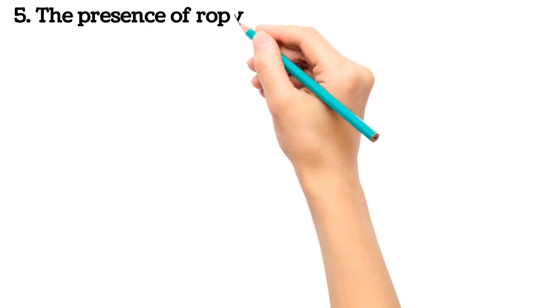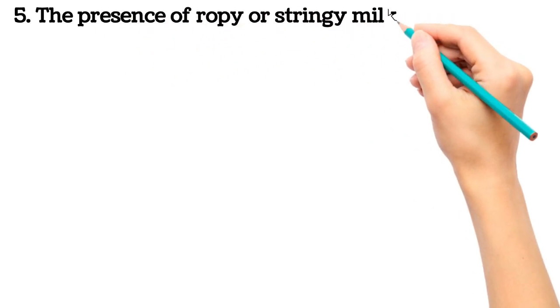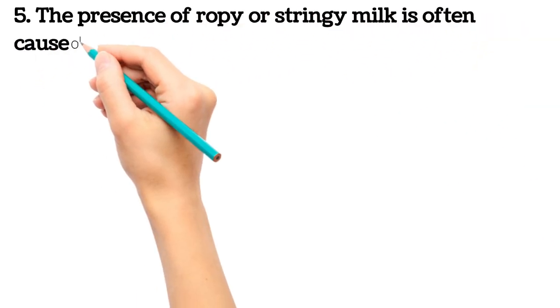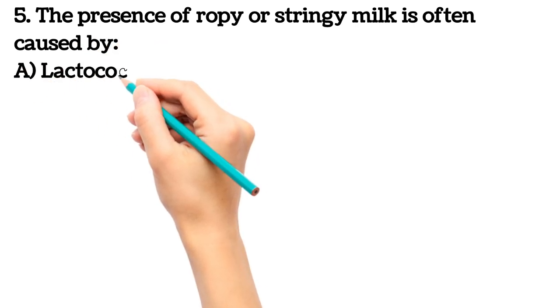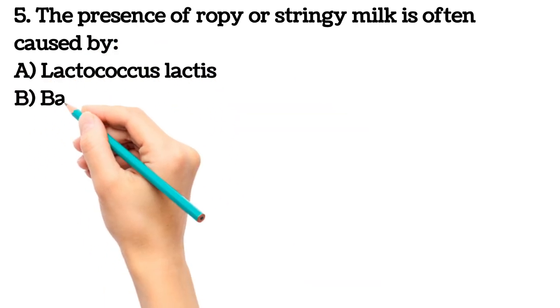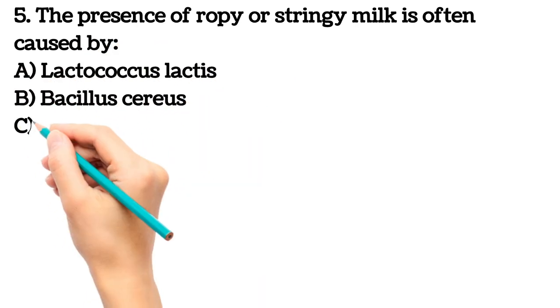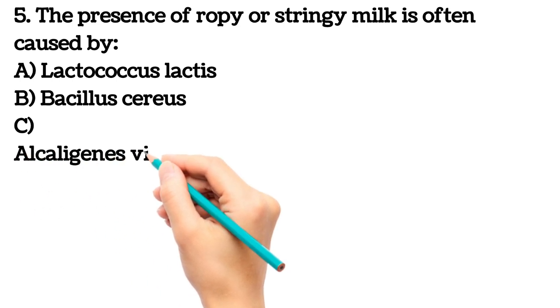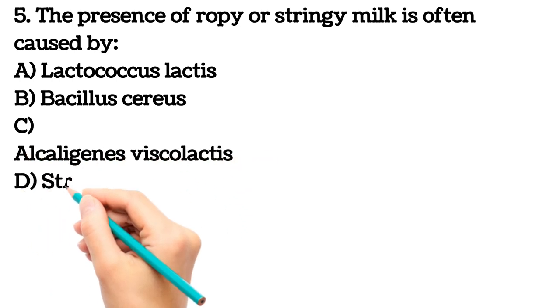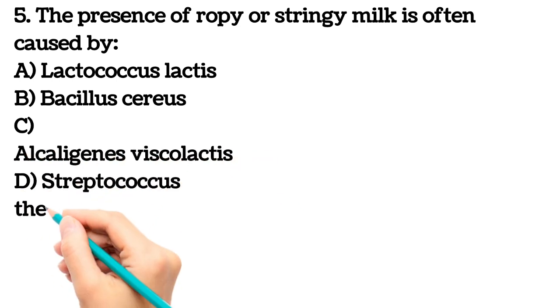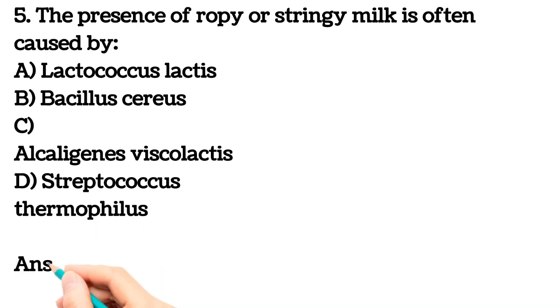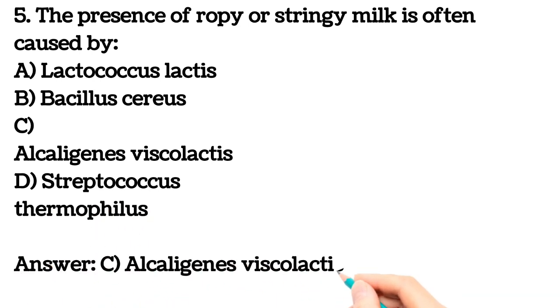Next question. The presence of ropy or stringy milk is often caused by A. Lactococcus lactis B. Bacillus cereus C. Alcaligenes viscolactis D. Streptococcus thermophilus. Which is the answer? Here answer is C, Alcaligenes viscolactis.